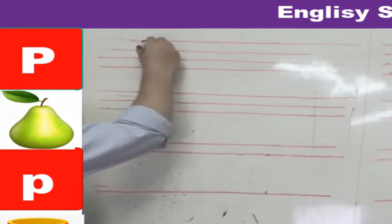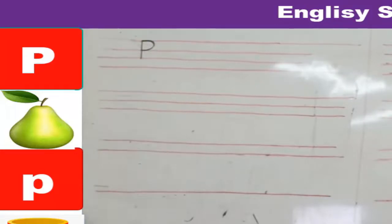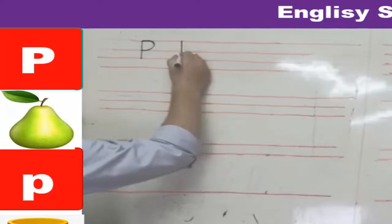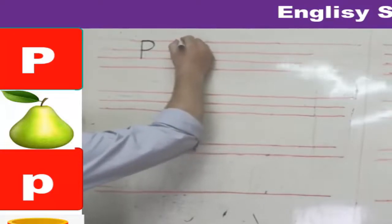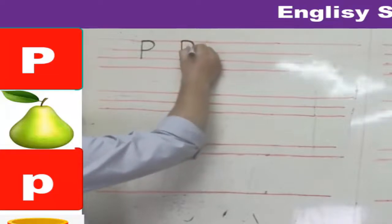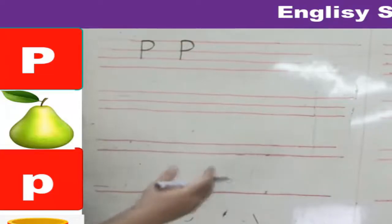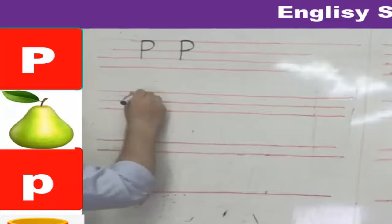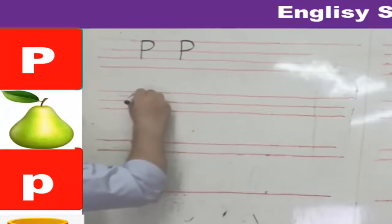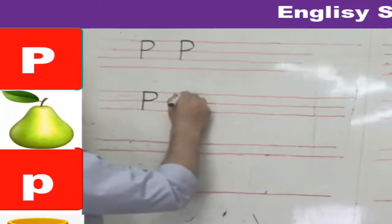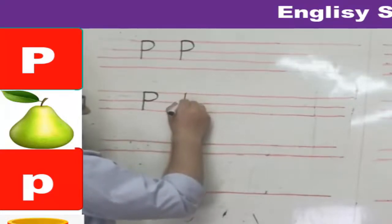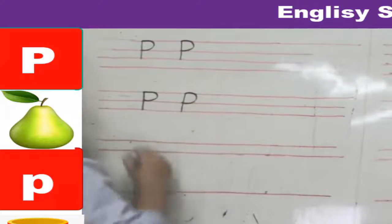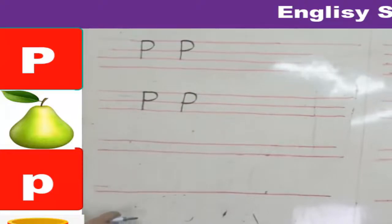Draw a straight line from the first line to the third line, then a curved line from the first to the second line — and that's the capital P. Again: from the first line go straight down to the third line, then a curved line from the top to the second line. That's capital P on the three lines.